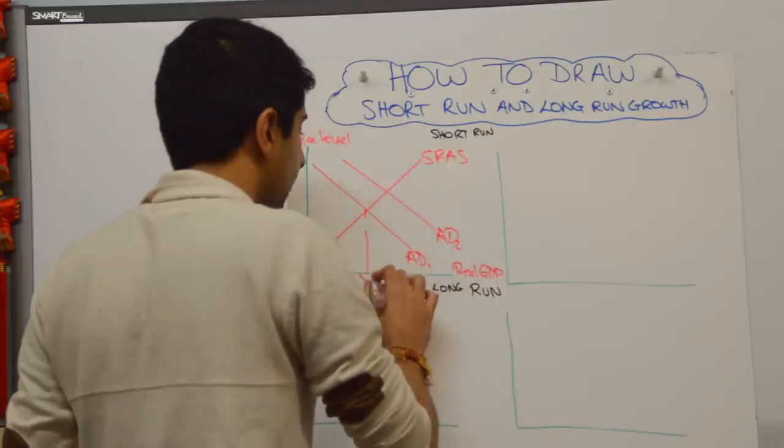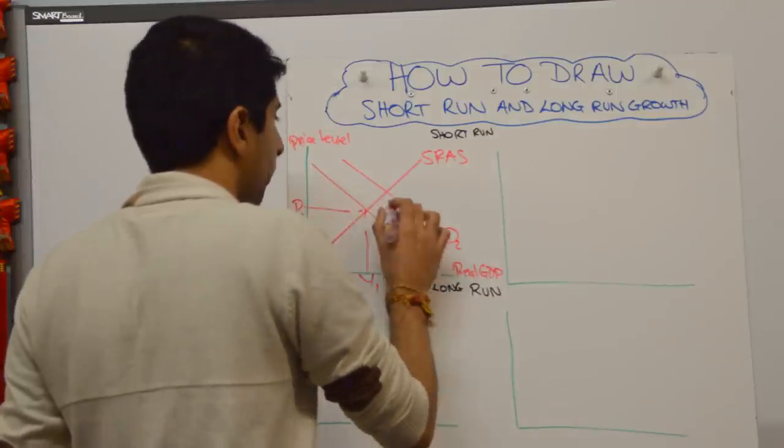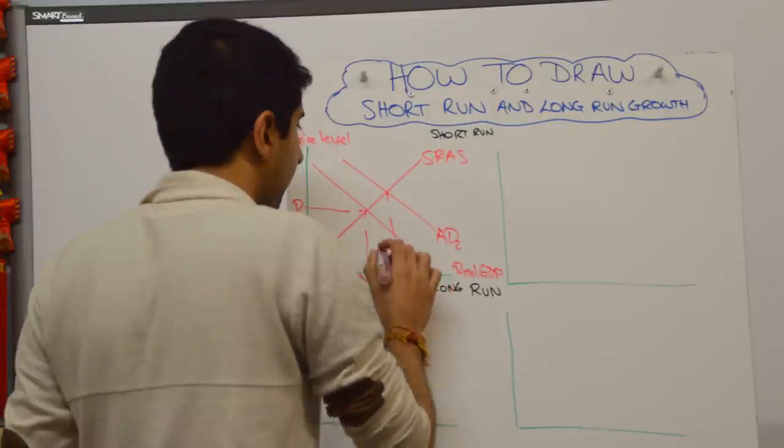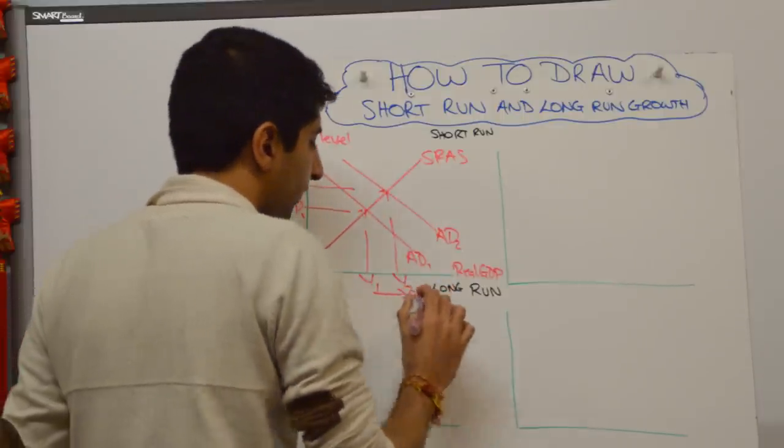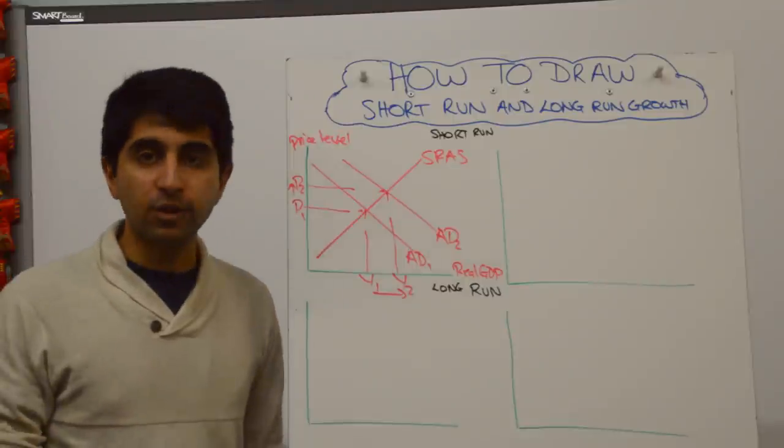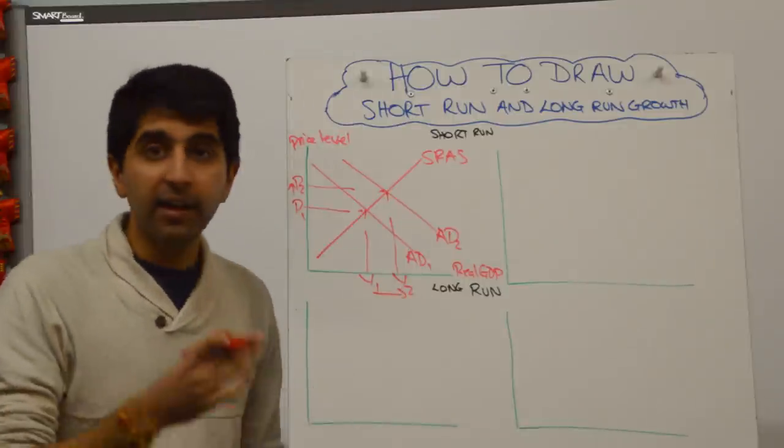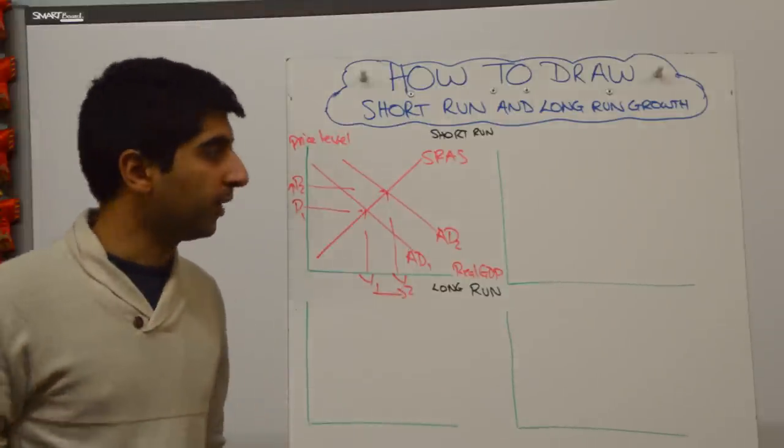And then we label equilibrium. We have P1 and Y1 initially and P2 and Y2 as new equilibria. The increase from Y1 to Y2 is the important thing that shows the increase in short-term growth.